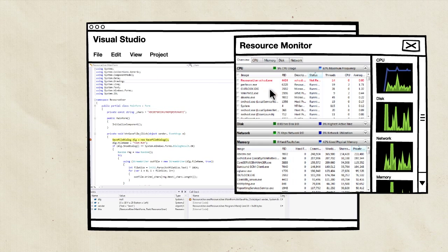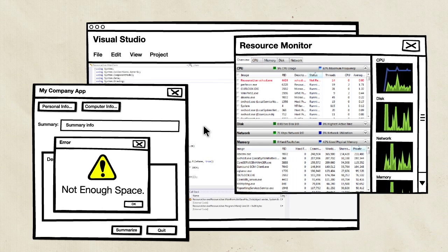With Resource Thief, you can simulate all these conditions on a standard computer, and only the application under test is limited. Your other tools continue to run, so you can find problems, and developers will see the same conditions when they run on their computers in debug mode.